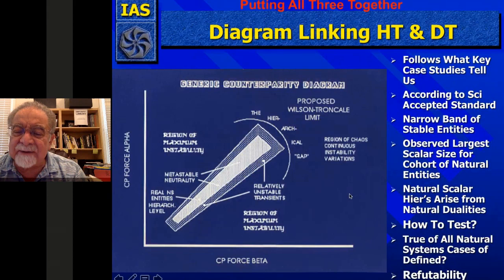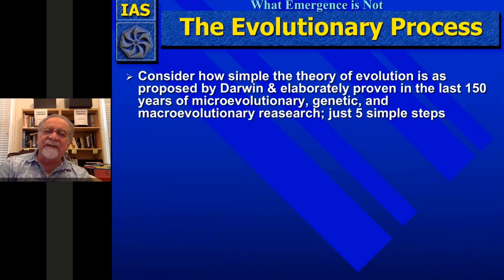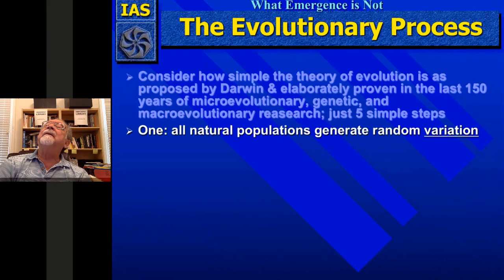There's this narrow band of stable entities — that's what we see as the level of the hierarchy. There's a larger scalar size for that cohort of natural entities, and the natural scalar hierarchies arise from these natural dualities. This is true then of all natural systems, and those that are defined — is it refutable? Yes, because we can disprove any of these things that we say here. The process for the emergence of new levels is different from the evolutionary process, which is just on the level of new species.